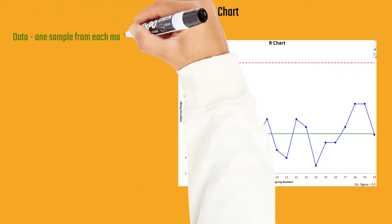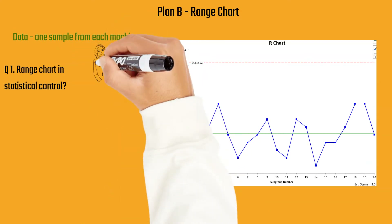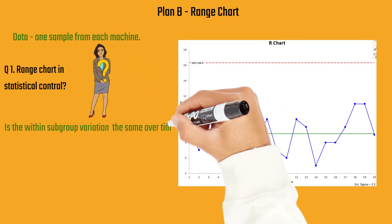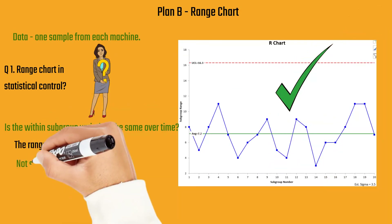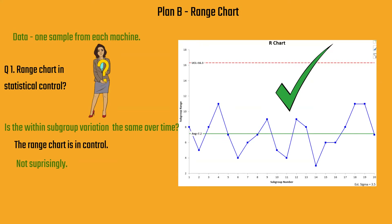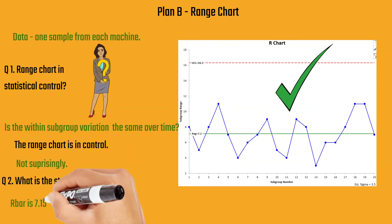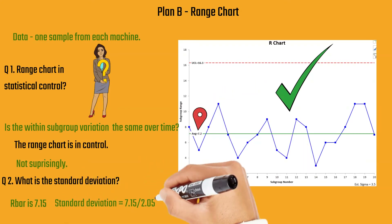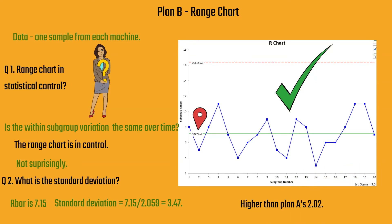Now here's Plan B and its range chart. There's one sample from each machine. Is it in statistical control? It's asking whether the within-subgroup variation is the same over time for all the machines. The range is in control — not surprising, our first one was also. What's the standard deviation? R-bar is 7.15, giving a standard deviation of 3.47, which is a little higher than Plan A's value of 2.02.